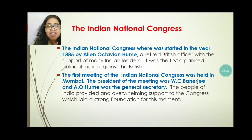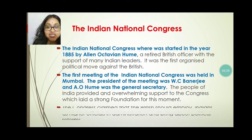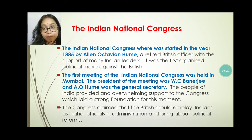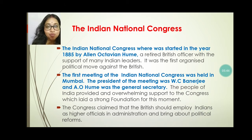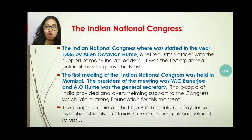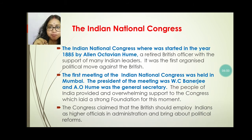The people of India provided overwhelming support to this Congress party, which led to a strong foundation for this movement. The Congress claimed that the British should employ Indians as higher officers in administration. During the time of British Raj, the British mostly hired Indian people in low-rank official positions. The Indian National Congress demanded that they should hire Indian people as higher officials in administration.